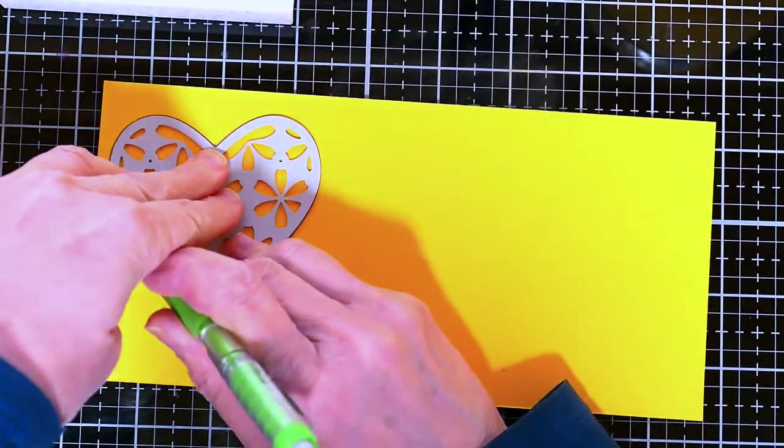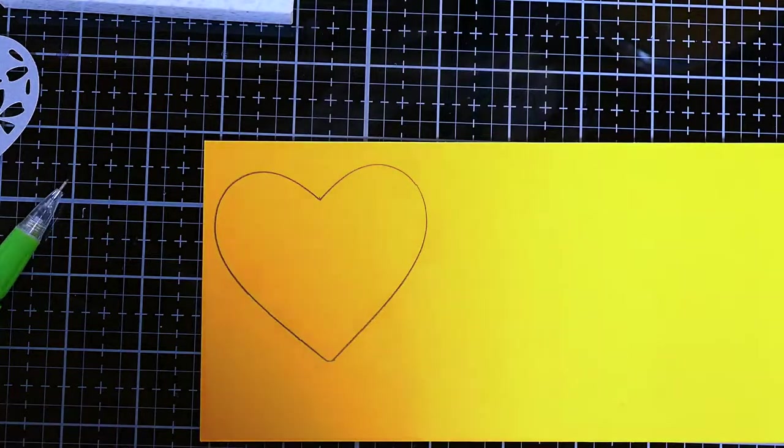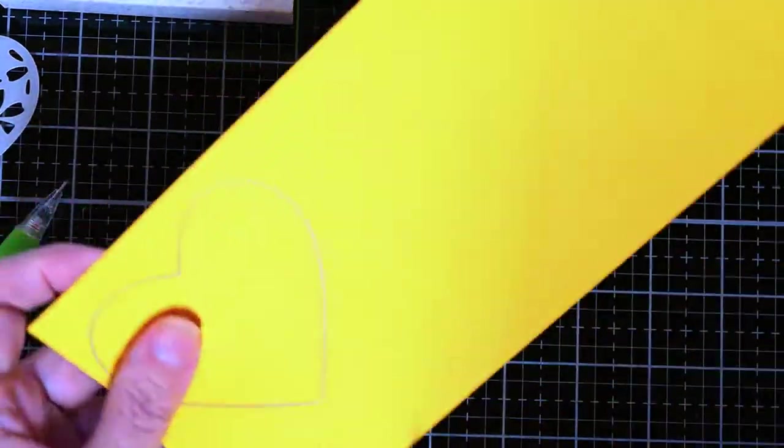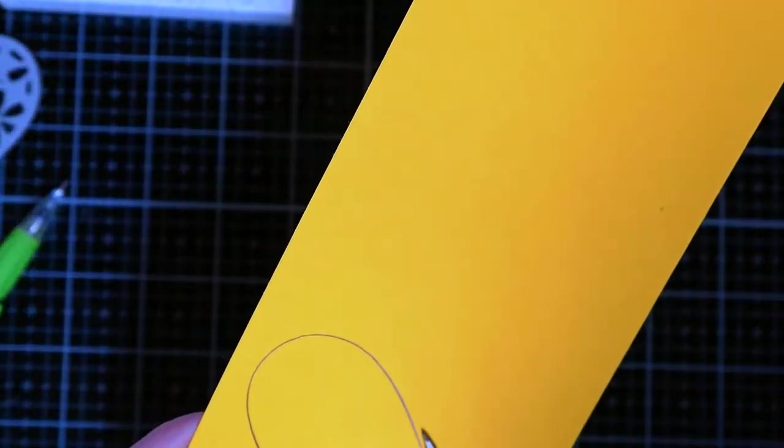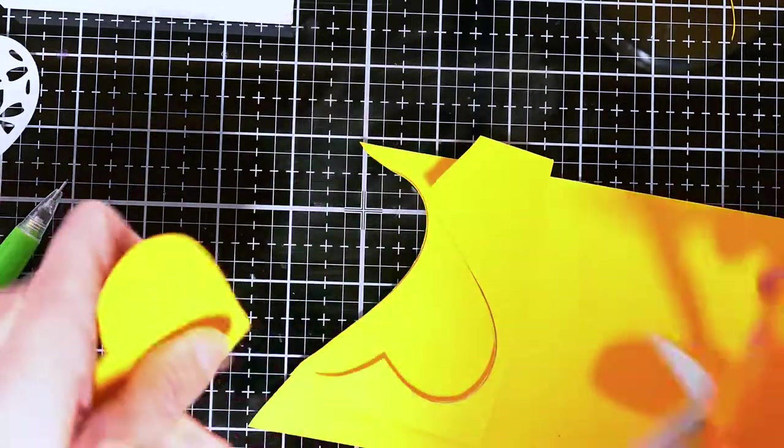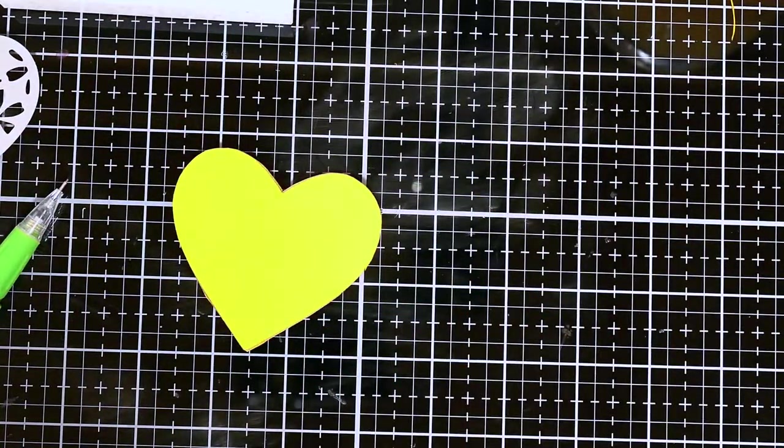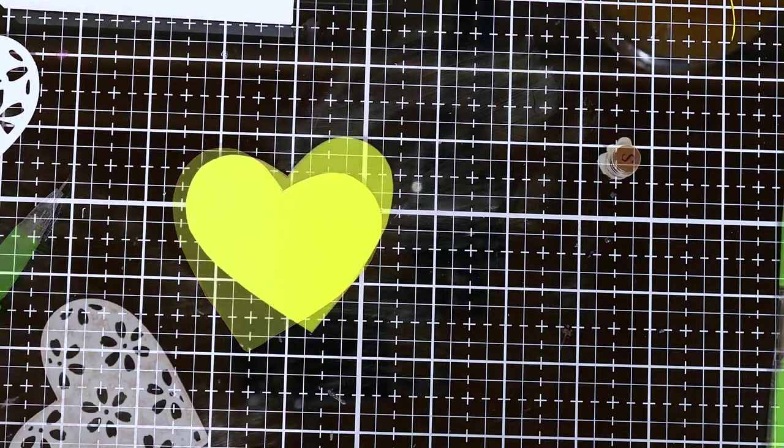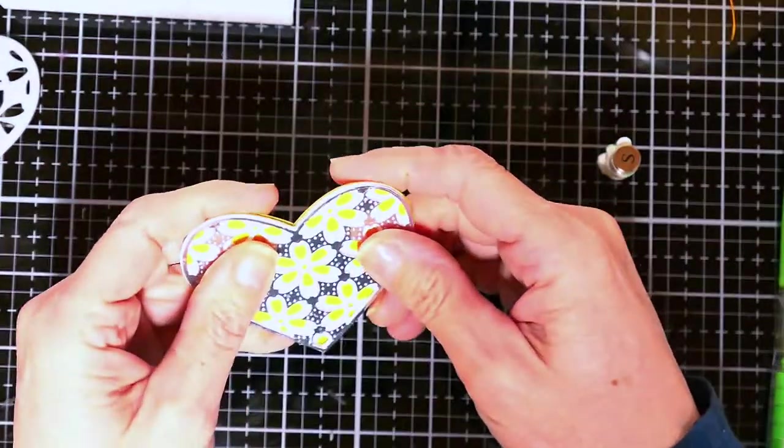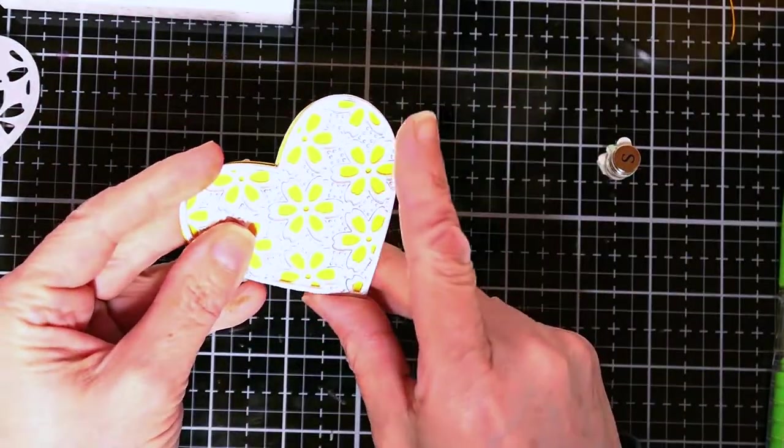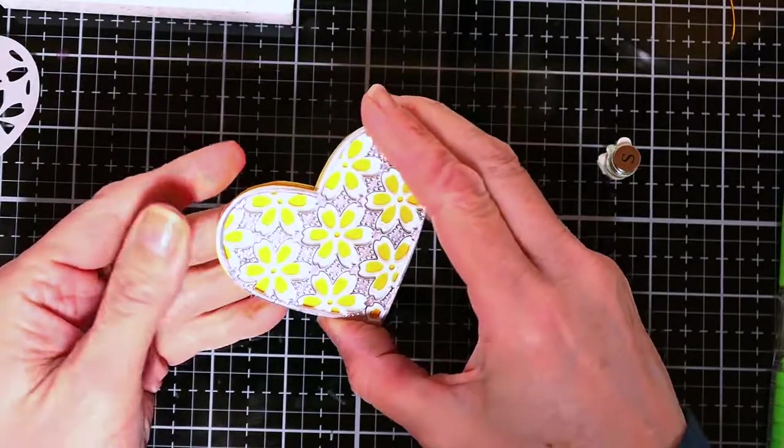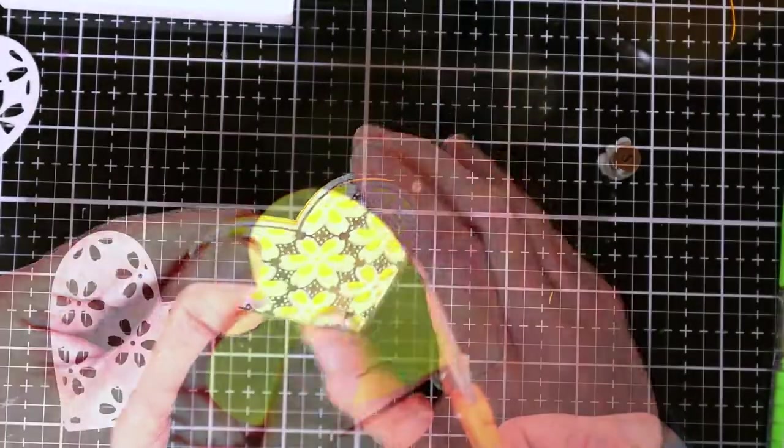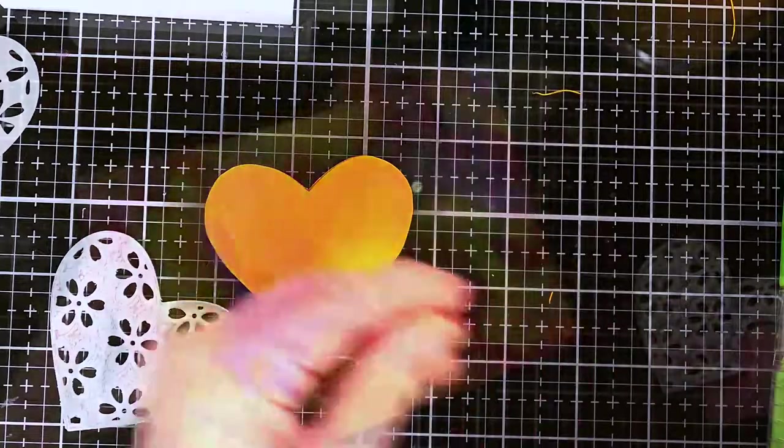While that was drying I went ahead and cut out the backing piece for the magnet and this could be any color of paper. I just had some yellow scrap laying around and it matched and so I just cut that out. And then I placed the top layer onto the backing just to make sure that none of the yellow was showing through from the backsides and so I just went ahead and trimmed any pieces that were sticking out.